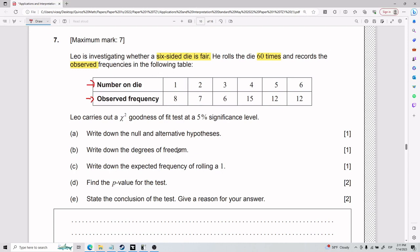So he threw this 60 times. Of the 60 times, the amount of times he got a 1 on the die was 8, the amount of times he got a 2 on the die was 7, the amount of times he got a 5 on the die was 12. Okay, so those are observed frequencies, not expected.